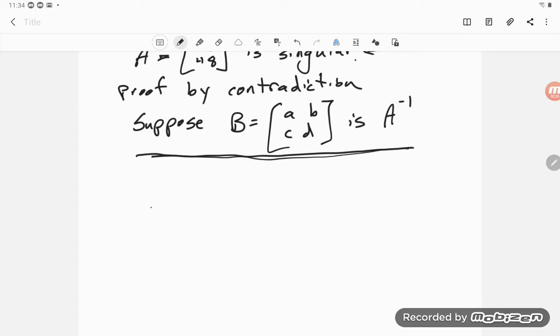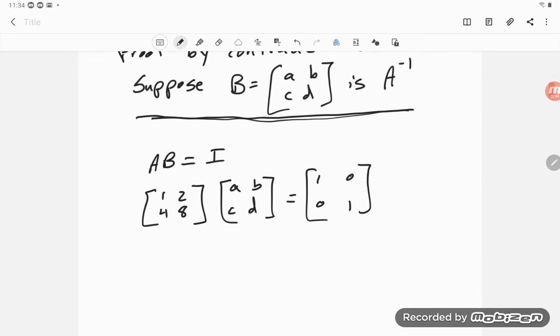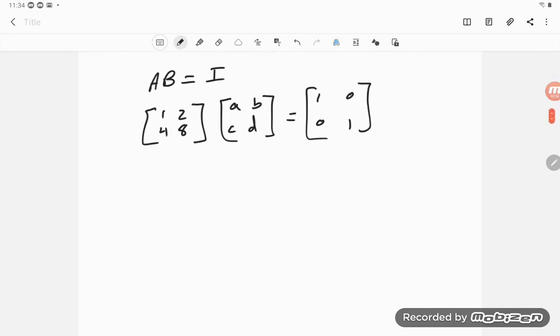If that is indeed A inverse, we know that A times B is equal to I. But A times B would be 1 2 4 8 times a b c d, and that is supposed to equal 1 0 0 1.